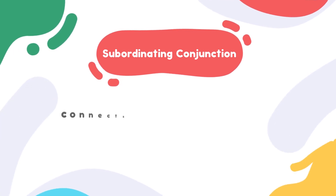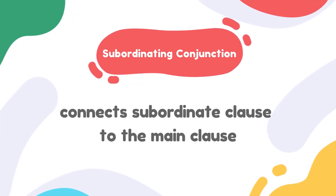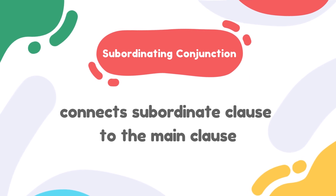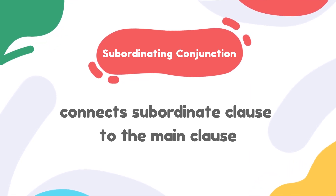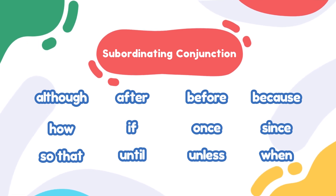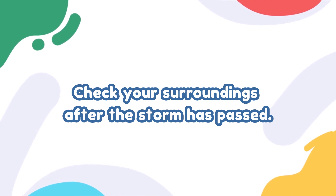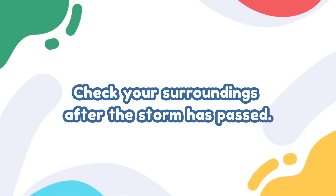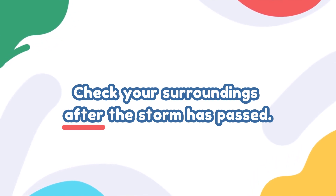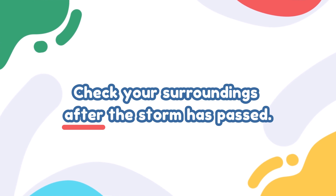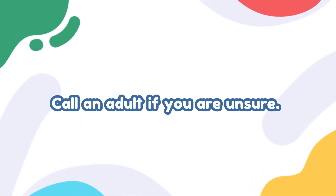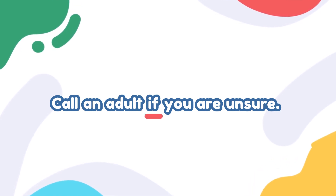Subordinating conjunctions are used to connect subordinate clauses — clauses that cannot stand alone — to main or independent clauses. There are many subordinating conjunctions. Can you spot them in these sentences? Check your surroundings after the storm has passed. The subordinating conjunction is 'after.' Call an adult if you are unsure. The subordinating conjunction is 'if.'